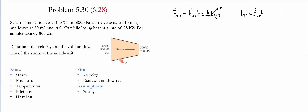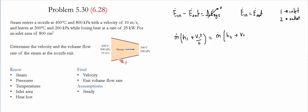We're going to use label 1 for the inlet and 2 for the outlet. The rate of energy going in is the addition of enthalpy, potential energy, and kinetic energy times the mass flow rate. Since the nozzle is horizontal, position has not changed, so there is no change in potential energy. Therefore the energy going in is simply mass flow rate times enthalpy plus kinetic energy at the inlet, plus the rate of heat lost by the nozzle, q-dot.